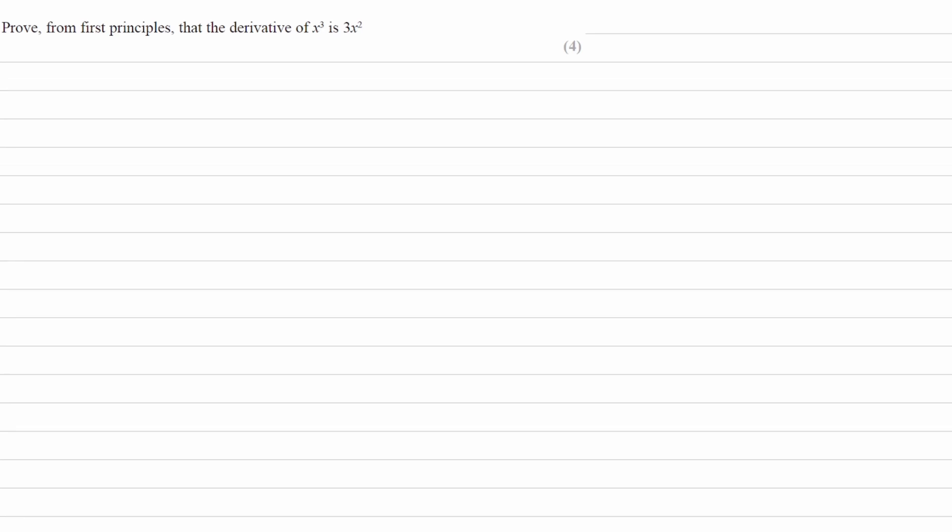For this question, we're trying to prove from first principles that the derivative of x cubed is 3x squared. Let's first define our function f of x. f of x is equal to x cubed. We're trying to find the derivative, so f dash x.